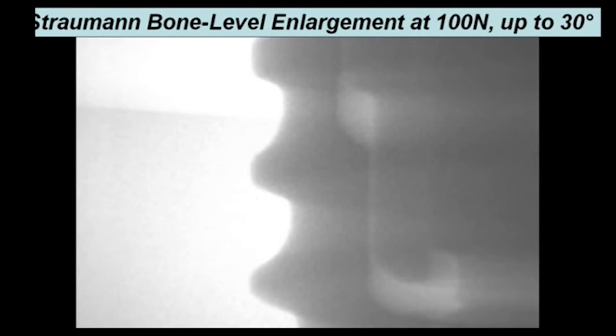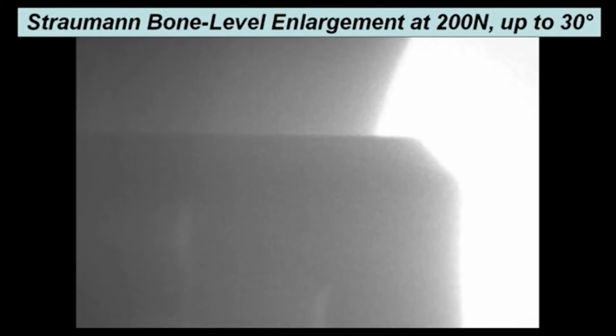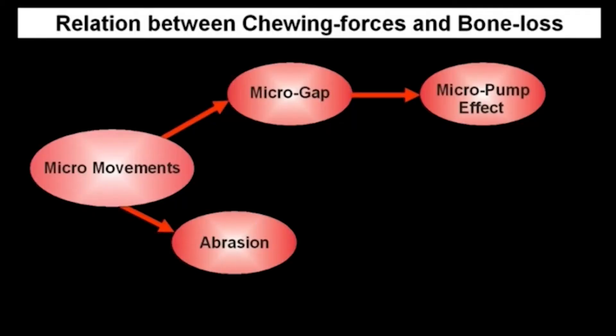But the interesting thing is, in the upper region at our conical interface, we see that the tension is so strong that we have no gap forming inside of the conical interface. But there is a movement inside because, logically, the abutment tilts permanently sideways. And so we have abrasion inside of this conical interface.